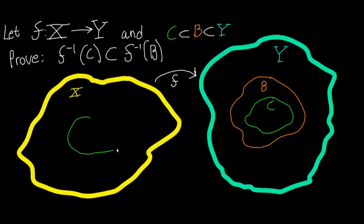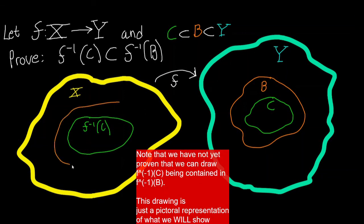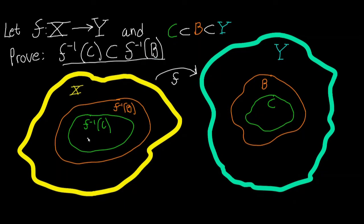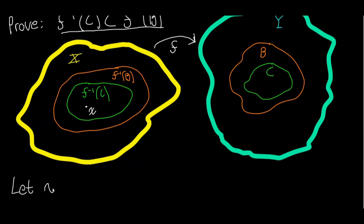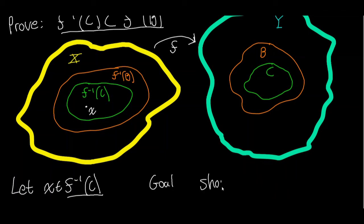We want to show that any point in the inverse image of C under f is also in the inverse image of B under f. To prove this, we let x be any point in the inverse image of C under f. Our goal is then to show that x is also in the inverse image of B under f, thus proving that the inverse image of C under f is a subset of the inverse image of B under f.